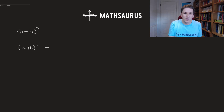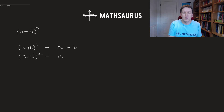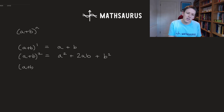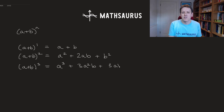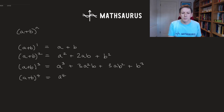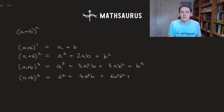So (a + b) to the 1 is obviously just a plus b. We should also know how to multiply out (a + b) squared as a squared plus 2ab plus b squared. And you could check by doing an ordinary expanding of brackets that (a + b) cubed gives a cubed plus 3a squared b plus 3ab squared plus b cubed. And one more: (a + b) to the 4 gives a to the 4 plus 4a cubed b plus 6a squared b squared plus 4ab cubed plus b to the 4.